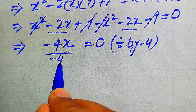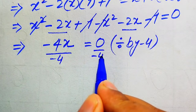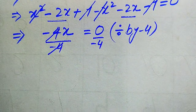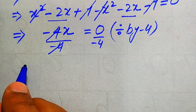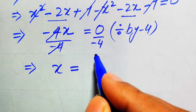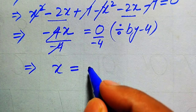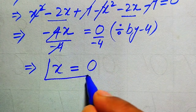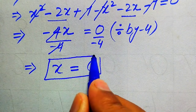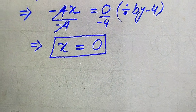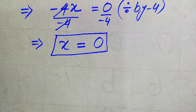Dividing both sides by -4, the -4 cancels and we get x = 0/(-4) = 0. So in this method we get only one root of the given equation: x = 0.